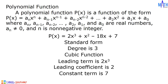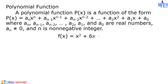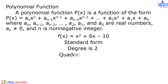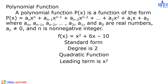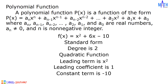Example number 2: P of X equals X squared plus 6X minus 10. This polynomial function is written in standard form. In this function, the degree is 2 — it is called a quadratic function. The leading term is X squared, the leading coefficient is 1, and the constant term is negative 10.